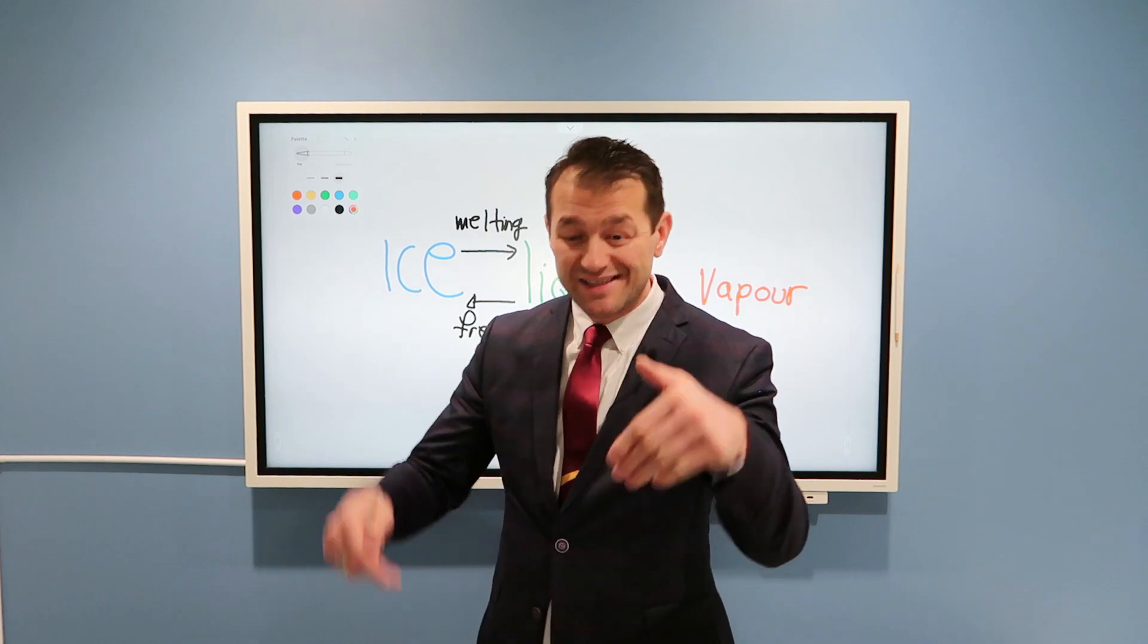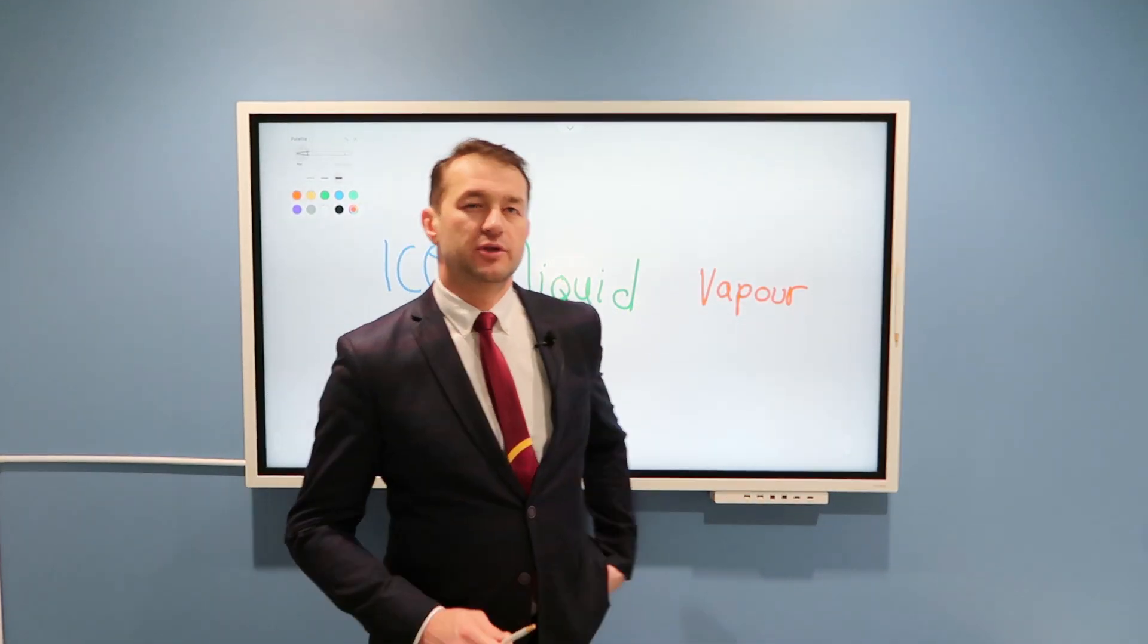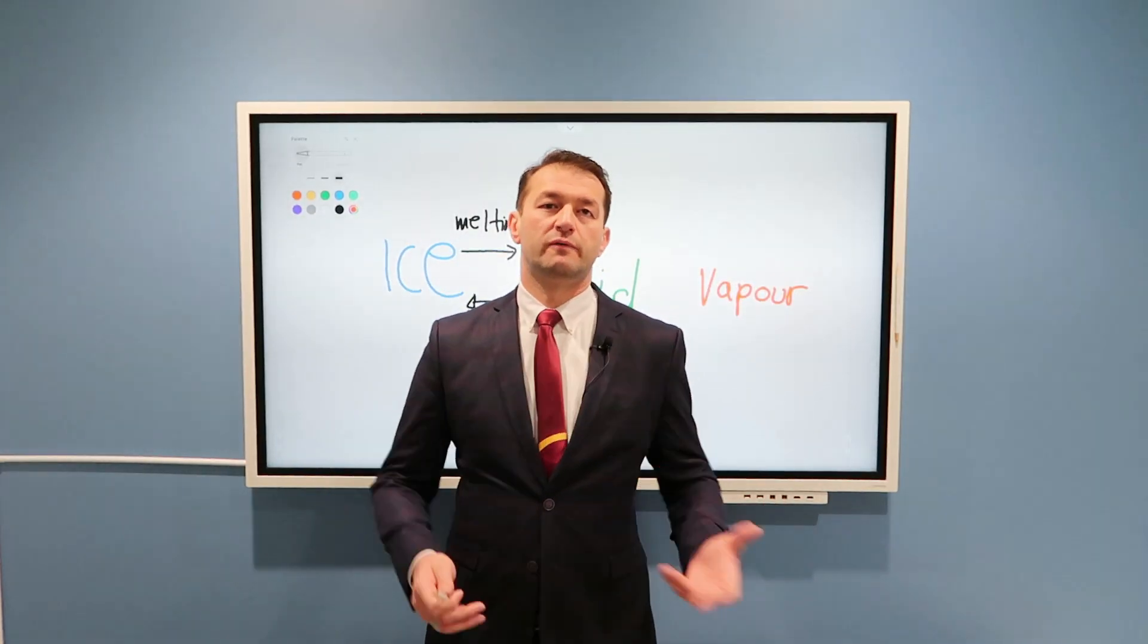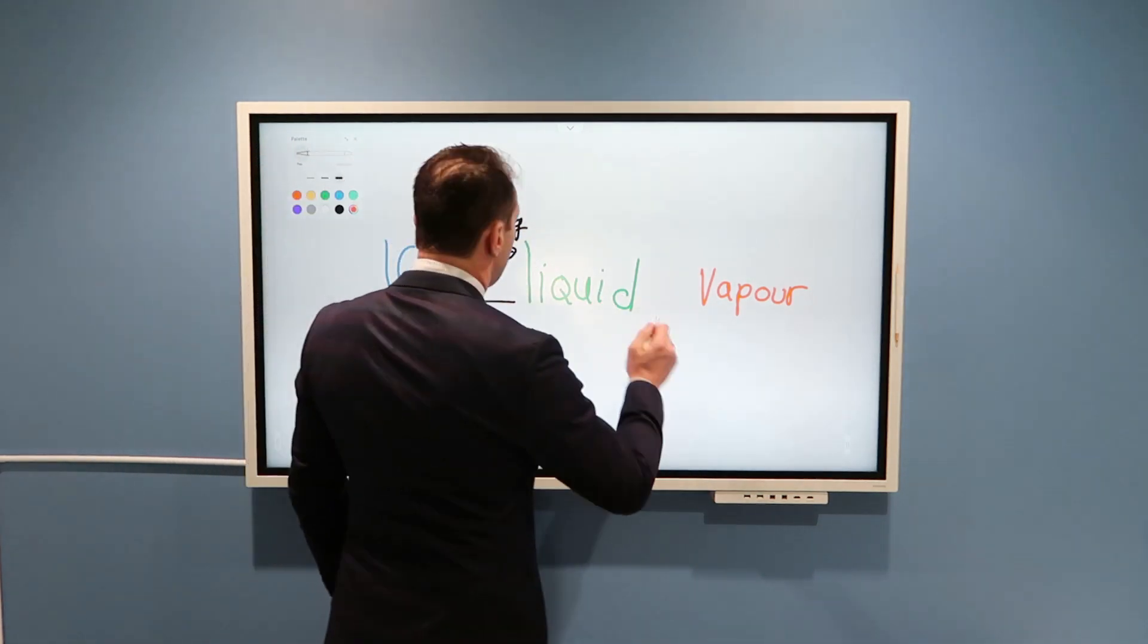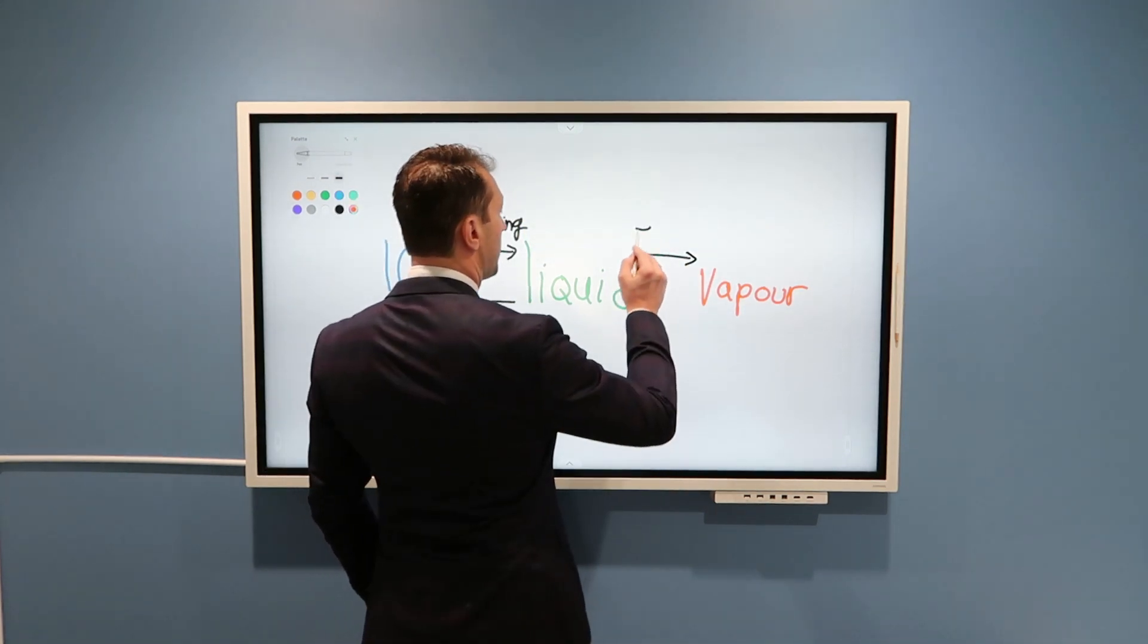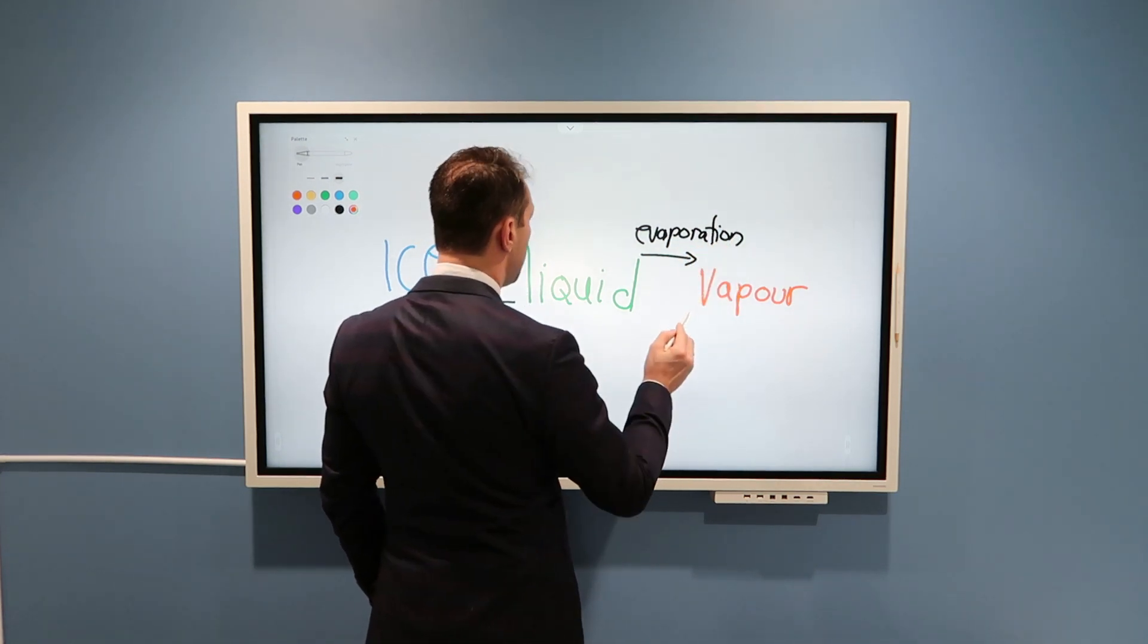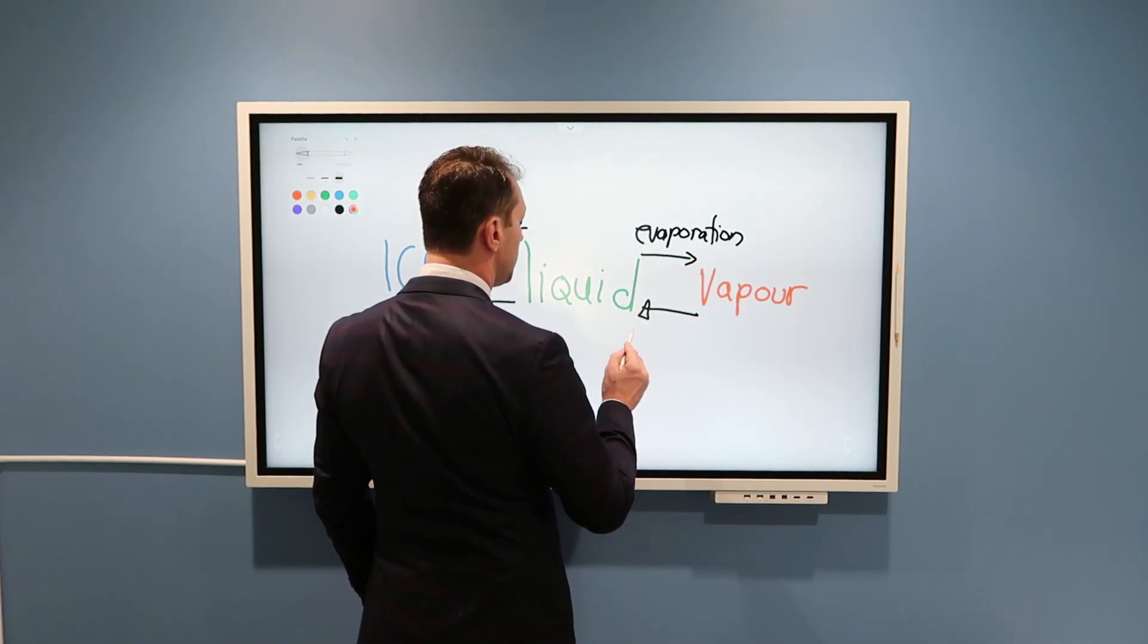And in clouds, water can stay liquid below zero degrees. How is that possible? That's called supercooled water. Again, stay tuned, I will describe that. But in general, when you put water in the freezer, it freezes at zero degrees Celsius. Now, liquid to vapor, that would be called evaporation. And vapor to liquid, well, that would be called condensation.